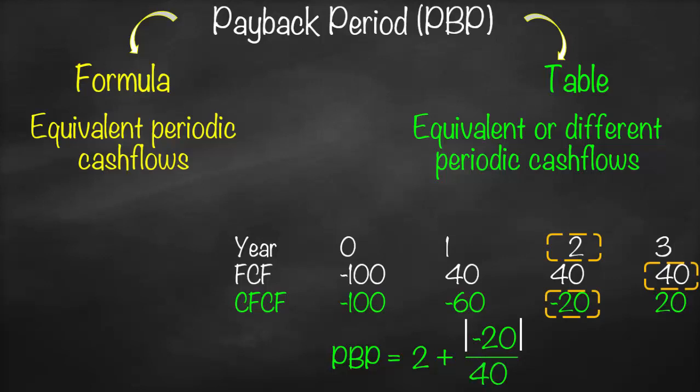So this gives us 2 plus 20 over 40, which is 2 plus one-half, giving us 2.5 years. This means that in this example, it will take two and a half years in order to get our money back.